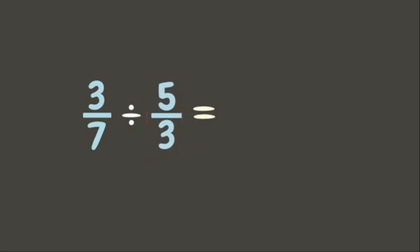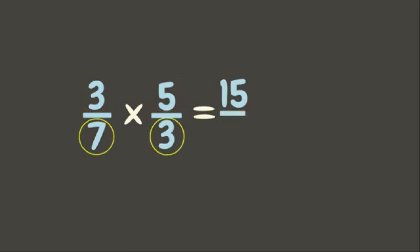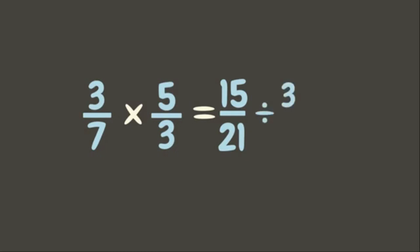Let's change division into multiplication, then multiply the numerators and denominators. Three times five is fifteen; seven times three is twenty-one. Is this our final answer? Not yet. We can divide fifteen and twenty-one by their greatest common factor, which is three. Fifteen divided by three is five; twenty-one divided by three is seven. Now this is our final answer.